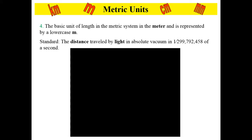But where did that meter come from? The standard represents where we actually determined that this length is going to be called one meter. The standard for the meter was the distance traveled by light — in an absolute vacuum, which in this case was space. The meter is the distance that light travels in space in 1/299,792,458th of a second. That's really, really fast.